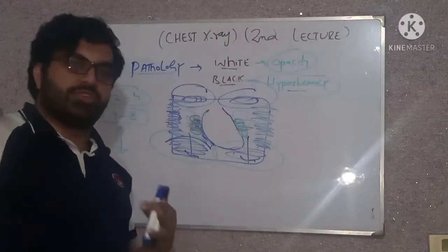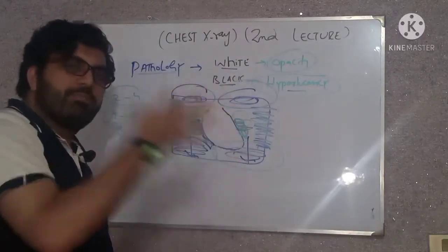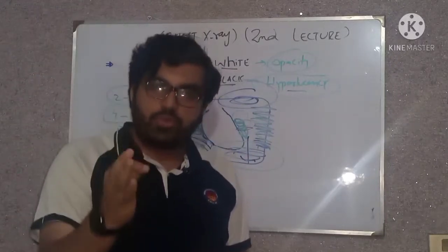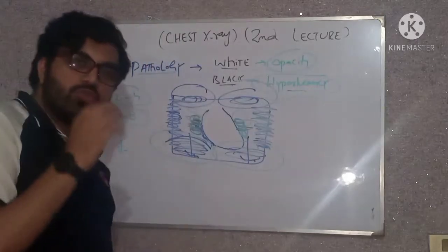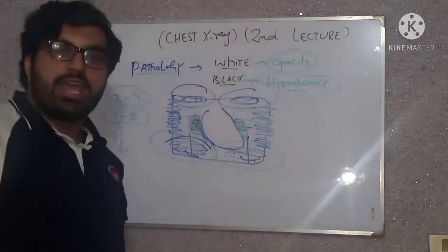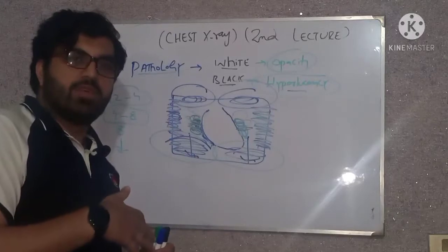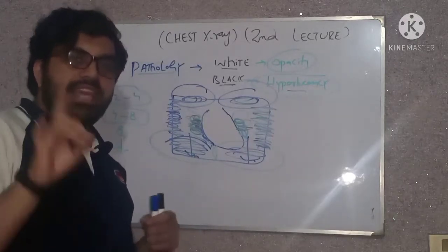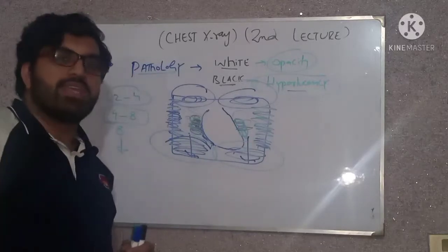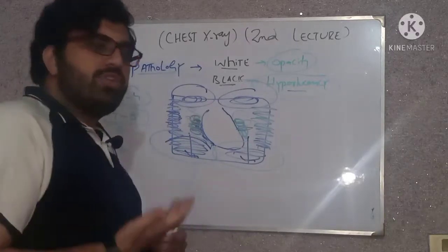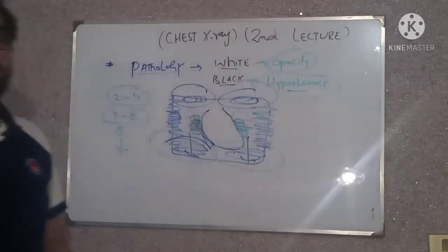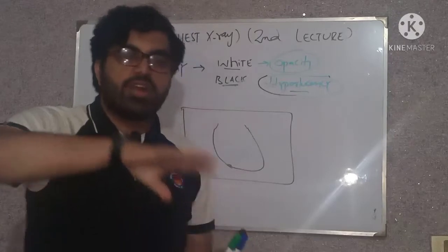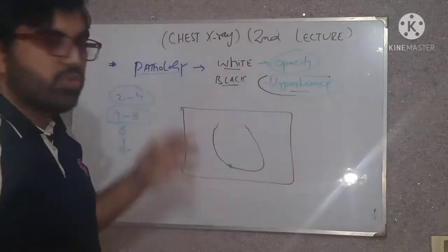So we end up describing a poor quality film and describing a pathology which in fact never existed in the patient — that pathology was because of the poor quality of the film. So make sure whenever you are going to interpret an X-ray, apply the criteria covered in the previous lecture. If the quality of the X-ray is good, only then move toward the pathology.